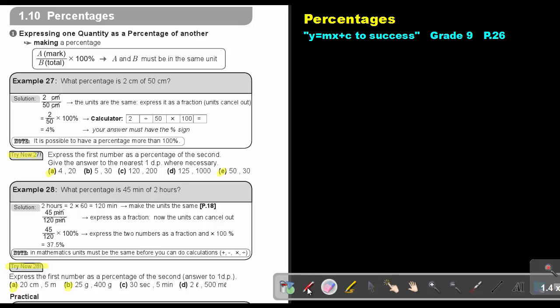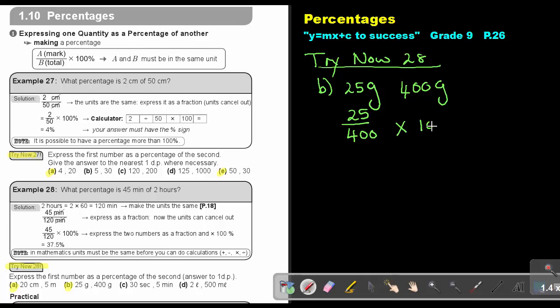Let's do number B. So we are still busy with try now 28. So if we look at number B, then it was 25 gram of 400. This is a nice one because it's also in gram. So basically, I can just take the 25 and I put it over the 400, and I just multiply it by 100%. And that's going to give me an answer of 6.25%. So just remember to make your units the same. If you want to make milliliters or liters to milliliters, you will just multiply a thousand. So first make your units the same.